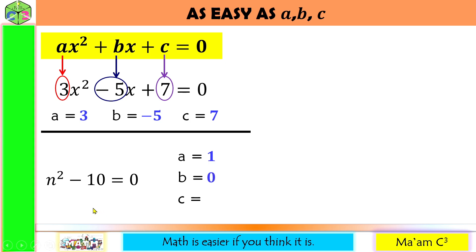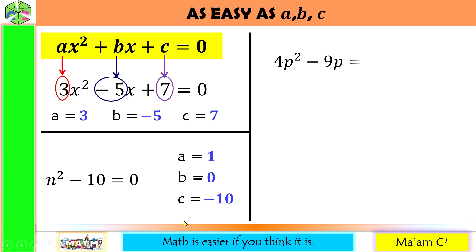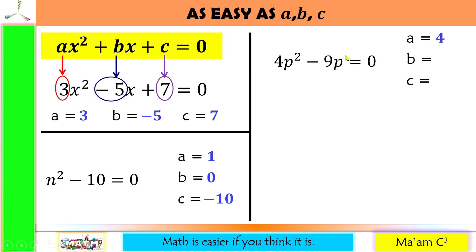Do not forget to include the sign. Let us have some more examples: 4p squared minus 9p equals 0. A is the numerical coefficient of the variable raised to the second power — that is 4. B is the numerical coefficient of the variable raised to the first power — don't forget the sign — so this is negative 9. And c is the constant. We do not have a constant here, so c is 0.